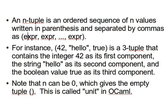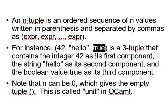The tuple is ordered, so whenever we declare a tuple and use it we must use it in the same order. For example, this tuple has the first value as 42 (integer), then the string 'hello', then 'true' which is boolean. This is a 3-tuple: it contains integer 42 as its first component, string 'hello' as its second, and boolean true as its third. The order is very important — please remember this.